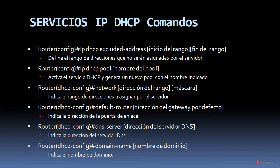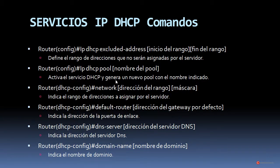En las siguientes diapositivas vamos a repasar comandos que hemos ido estudiando anteriormente y alguno nuevo, que nos va a permitir verificar el funcionamiento del servidor DHCP, ver las direcciones que se han asignado, etc. Empezamos con el comando ip dhcp excluded-address inicio del rango y fin del rango, que define el rango de direcciones que no serán asignadas por el servidor. Luego tenemos el comando ip dhcp pool y el nombre del pool, que activa el servicio DHCP y genera un nuevo pool con el nombre indicado.